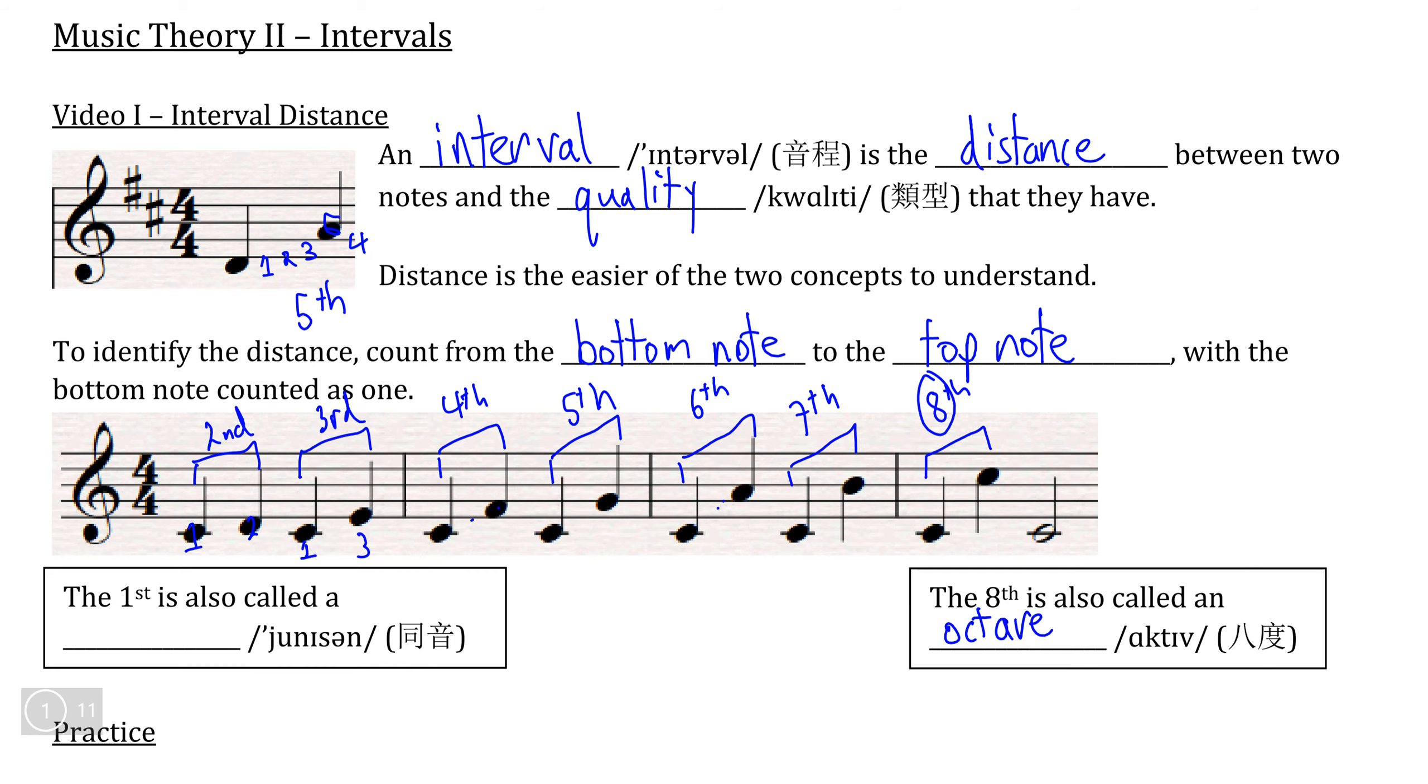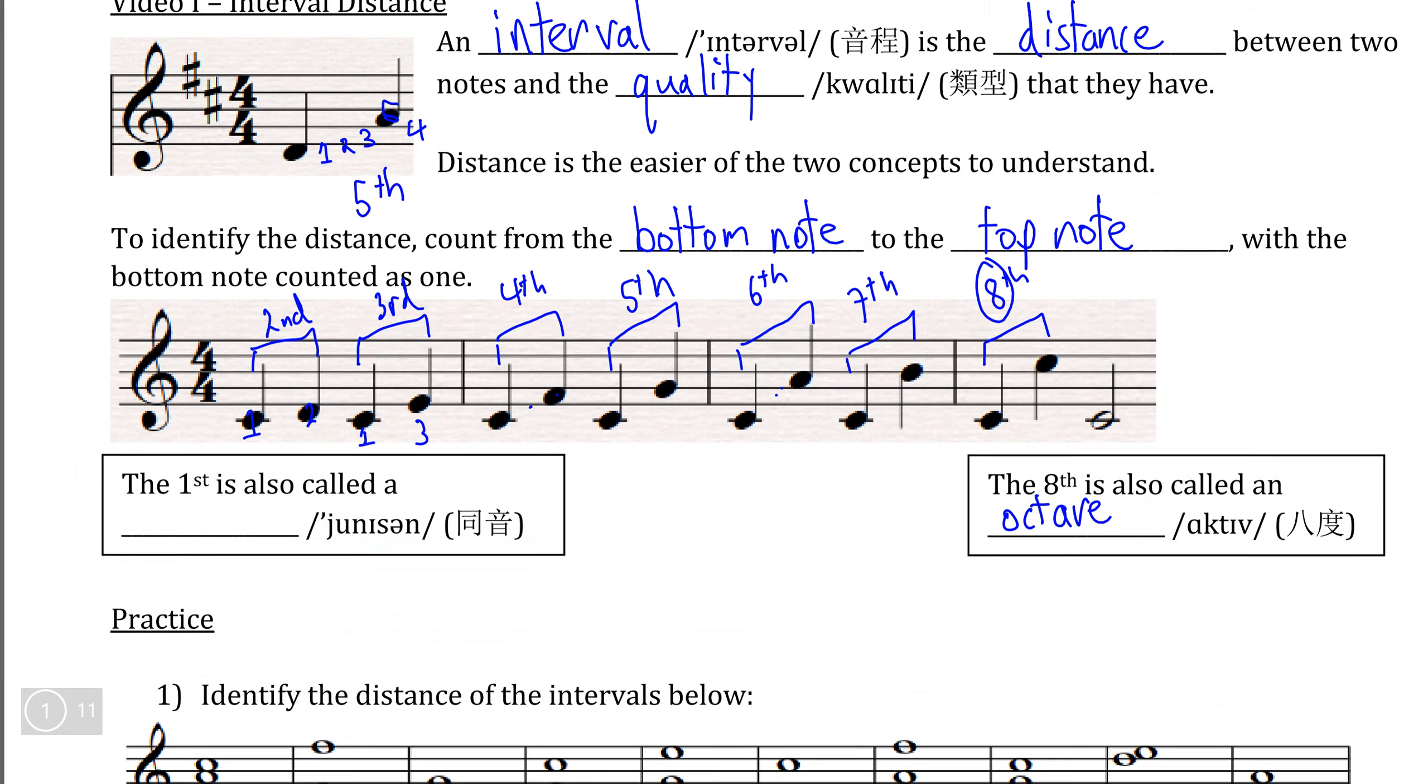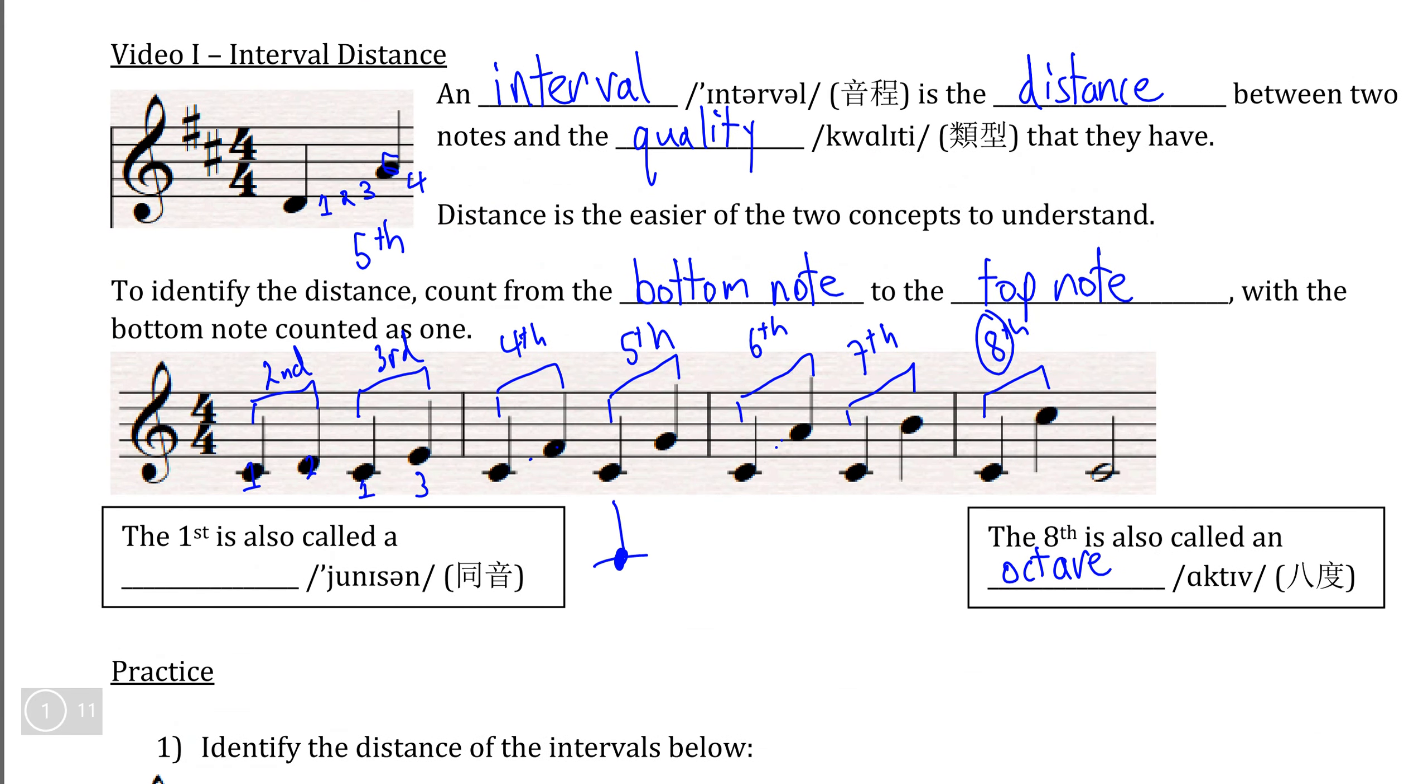The only other interval that is given a special name is if we have a note—for example, if we have middle C and if you play a middle C right after that. This seems a little bit silly to call it an interval, but remember that if we classify the bottom note as one, then we end on the same note, which is also one. And therefore, our interval is one or what we would call a unison.